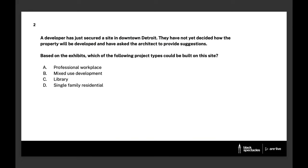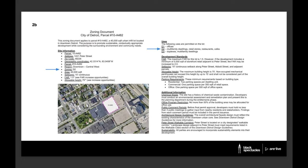Question two: A developer has just secured a site in downtown Detroit. They have not yet decided how the property will be developed and have asked the architect to provide suggestions. Based on the exhibits, which of the following project types could be built on this site? The possible answers are professional workplace, mixed-use development, library, and single-family residential. The correct answer is B, mixed-use development. These upcoming questions are intended to mimic what you might see during the case study portion of the exam.